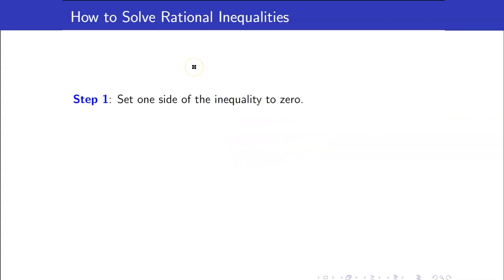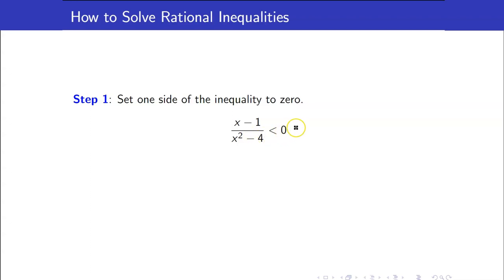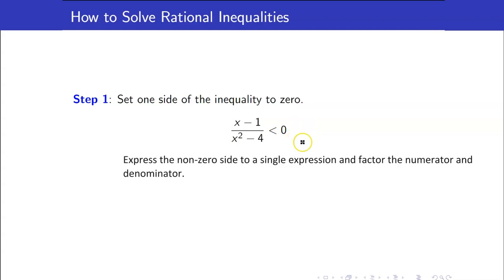Here are the steps to solve rational inequalities. The first step is to set one side of the inequality to 0. For example, we have (x-1) all over (x squared minus 4) less than 0. There is nothing to do in this case because one side is already equal to 0.